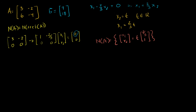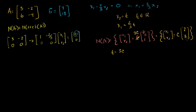Just to write the null space with a slightly simpler basis vector without fractions, let's pick t to be equal to 3c. Then we can rewrite this as the set of x1, x2's equal to the scalar c times the vector 2, 3 — since 3 times 2/3 is 2 and 3 times 1 is 3. We could also write that the null space is equal to the span of the vector 2, 3. So we've figured out the null space.